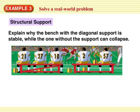Okay, another one. Structural support. Explain why the bench with the diagonal support is stable, while the one without the support can collapse. So here I have the diagonal support, and here I do not. If I think about this one, once those nails get loose, this thing could wiggle from side to side. If these guys were wiggling back and forth, it could just collapse and they could topple over, which honestly could be quite funny but sad if they got hurt, right? But the bench with the diagonal support forms triangles. This diagonal means that I have two triangles with fixed lengths, and the triangles cannot change shape. So the bench is stable.